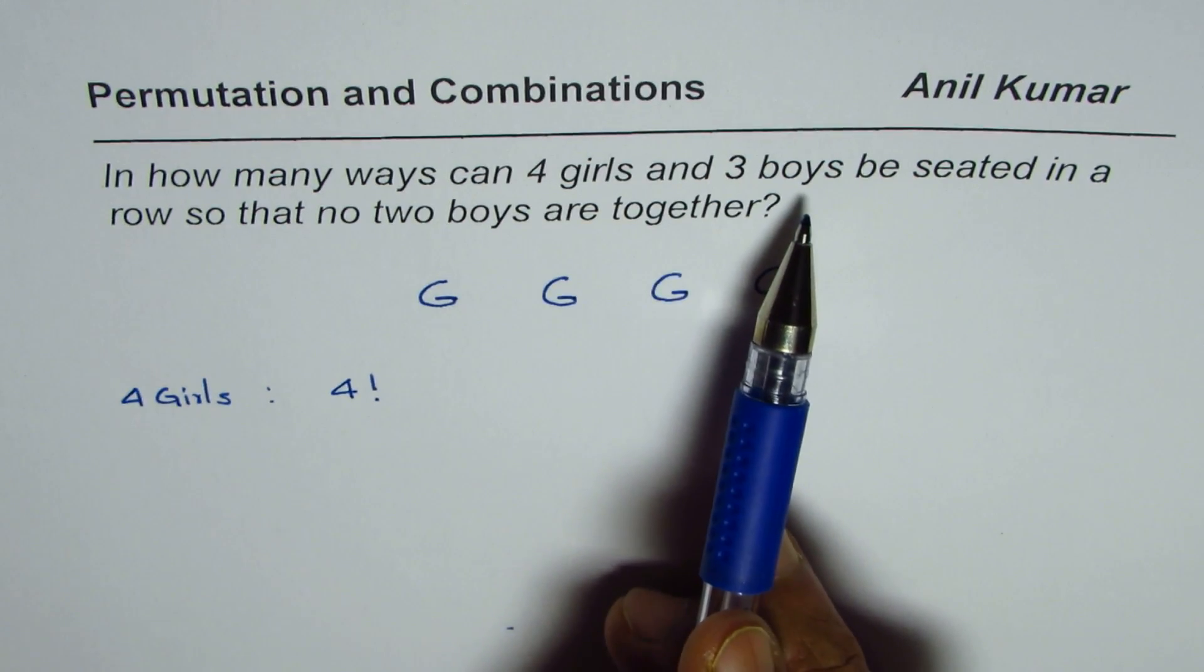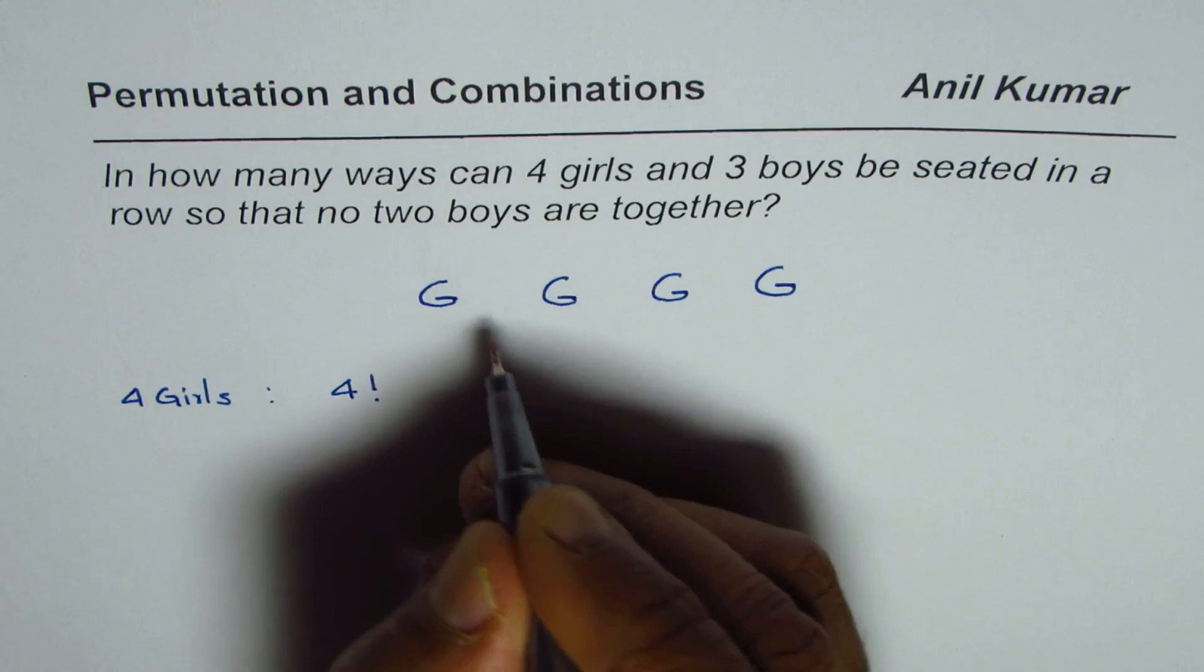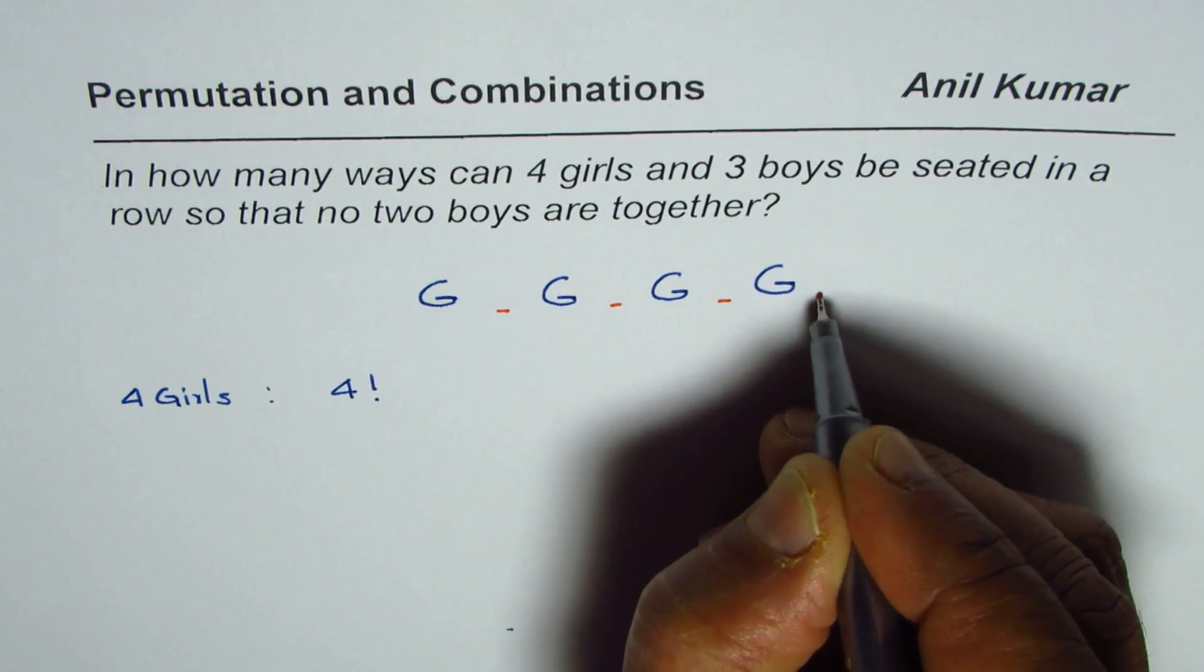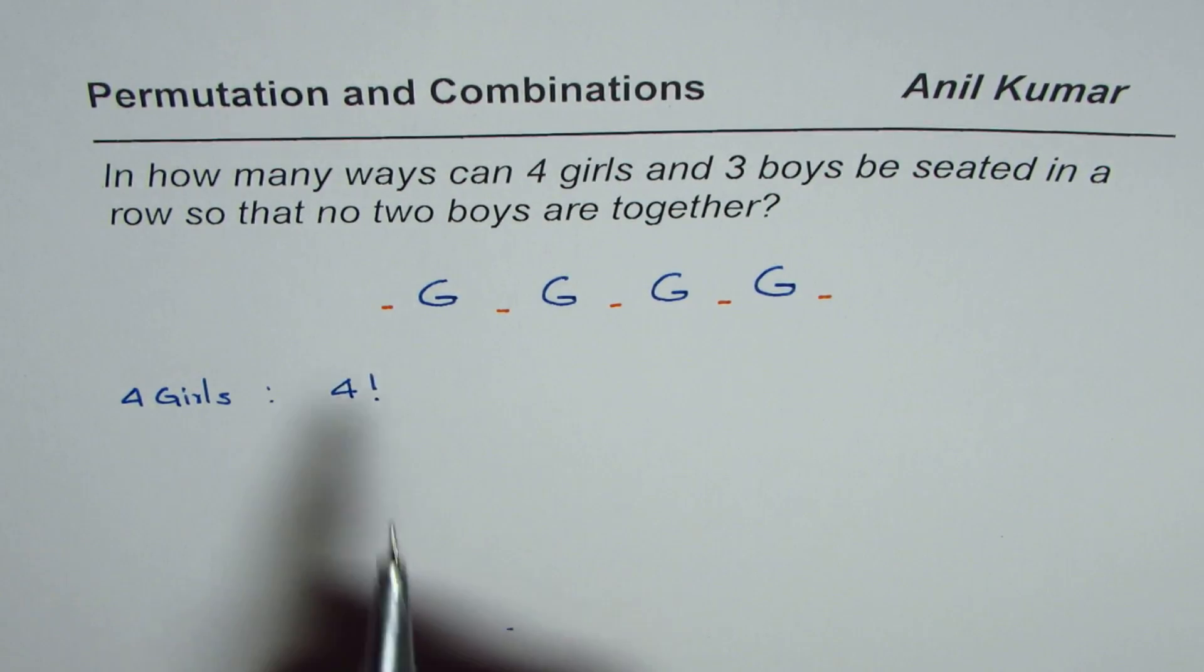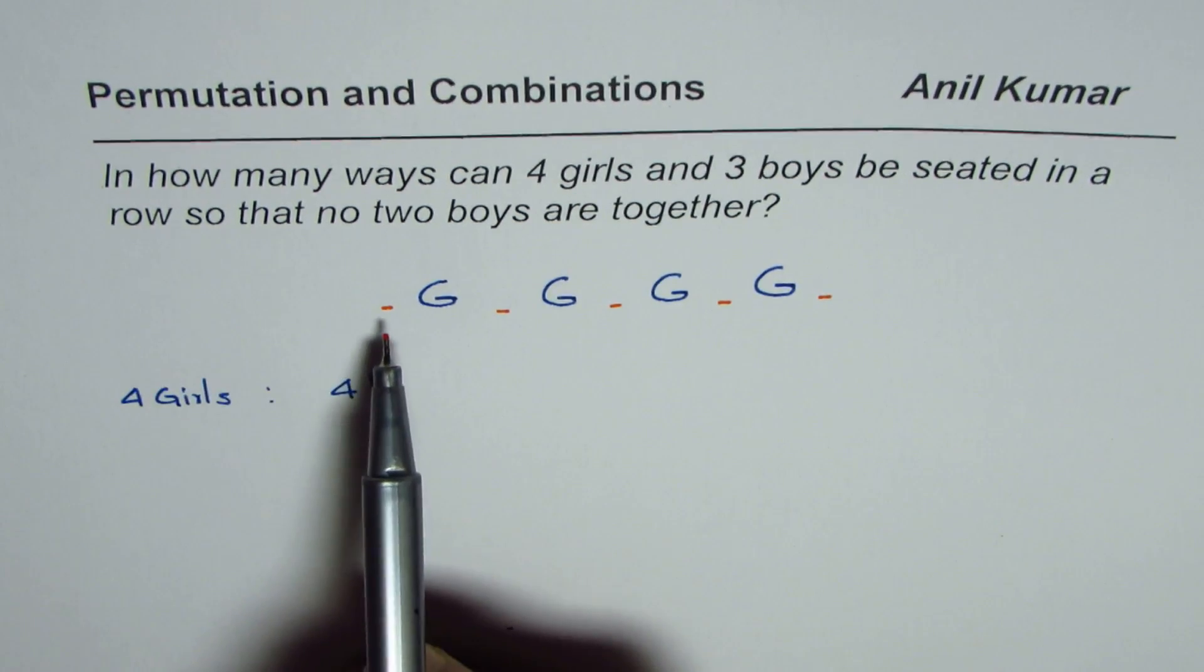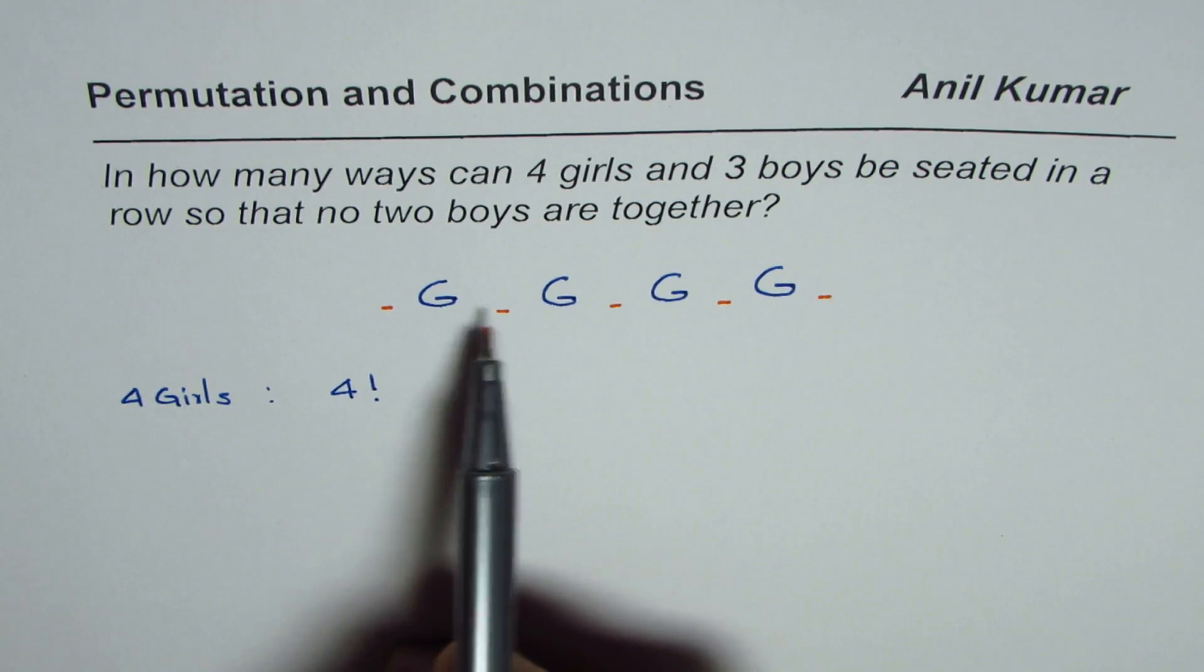Now boys cannot be seated together. That is to say that boys could take a position in between the girls, these positions, or in the end or in front. So these are possible positions for the boys. And what do we have, we have one, two, three, four, five positions to fill.